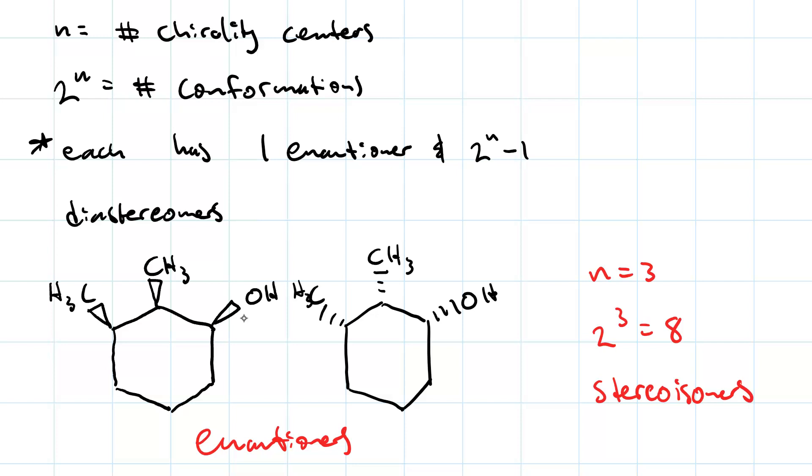That means there are six others that are missing, and they will all be diastereomers of both of these molecules. But they'll all be in three sets of two, where they're enantiomers of each other. Pause and draw the other six.